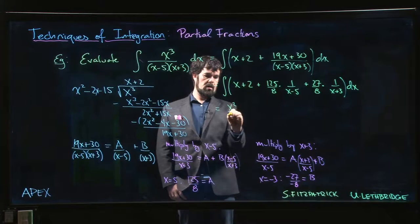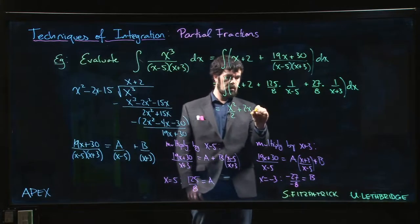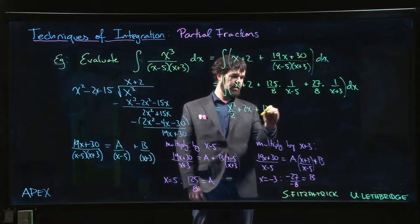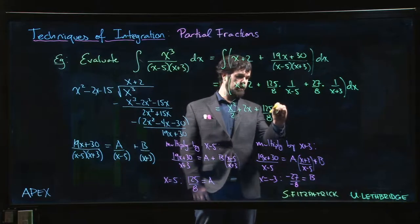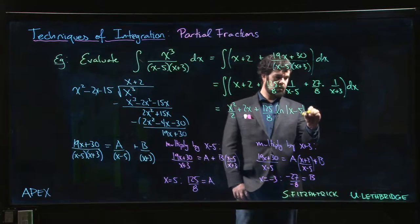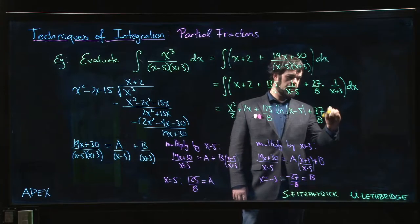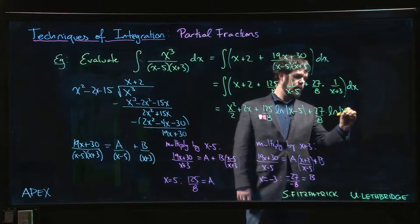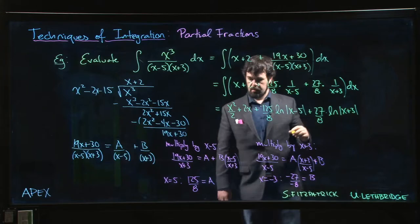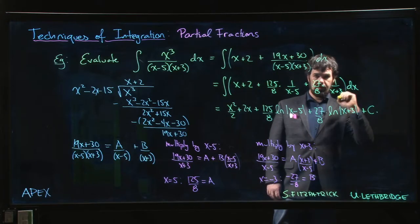x squared over 2, plus 2x, plus 125 over 8 times the natural log of (x minus 5), plus 27 over 8 times the natural log of (x plus 3). And as always, don't forget your constant.